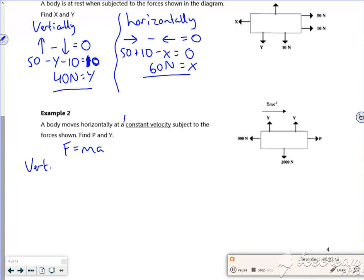Constant velocity is also the acceleration zero, so I'm still on F equals zero. So that's nice. So I'm going to do up take away down is equal to zero. So Y plus Y minus 2000 is equal to zero. So Y is 1000 newtons.